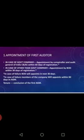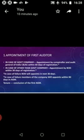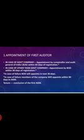If the Comptroller and Auditor General of India fails to appoint an auditor within 60 days, the Board of Directors will appoint in the next 30 days. If the Board of Directors also fails, then at an Extraordinary General Meeting, an auditor shall be appointed who shall hold office till the conclusion of the First Annual General Meeting.